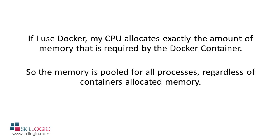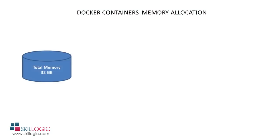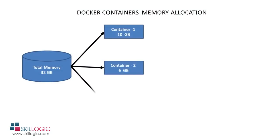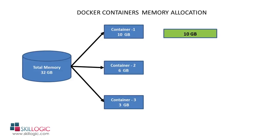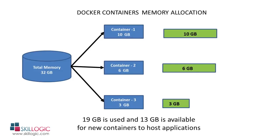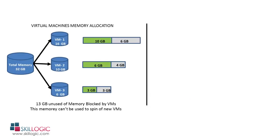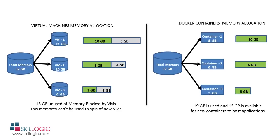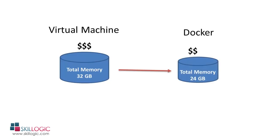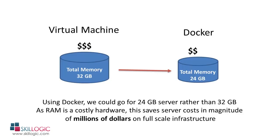With Docker, the CPU allocates exactly the amount of memory required by each container, and memory is pooled across all processes regardless of what's allocated. On the same 32 GB machine, containers use exactly the memory utilized by their processes — no unused memory is blocked. This releases that 13 GB for new containers. Docker uses dynamic memory allocation, which reduces infrastructure waste and translates into huge savings. Because Docker uses less memory, you could get by with 24 GB RAM hardware instead, saving millions of dollars at full-scale infrastructure.